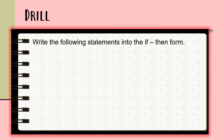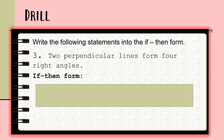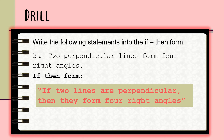For number three, we have the statement: 'Two perpendicular lines form four right angles.' Transform this into an if-then form. The if-then form of the statement is: 'If two lines are perpendicular, then they form four right angles.'